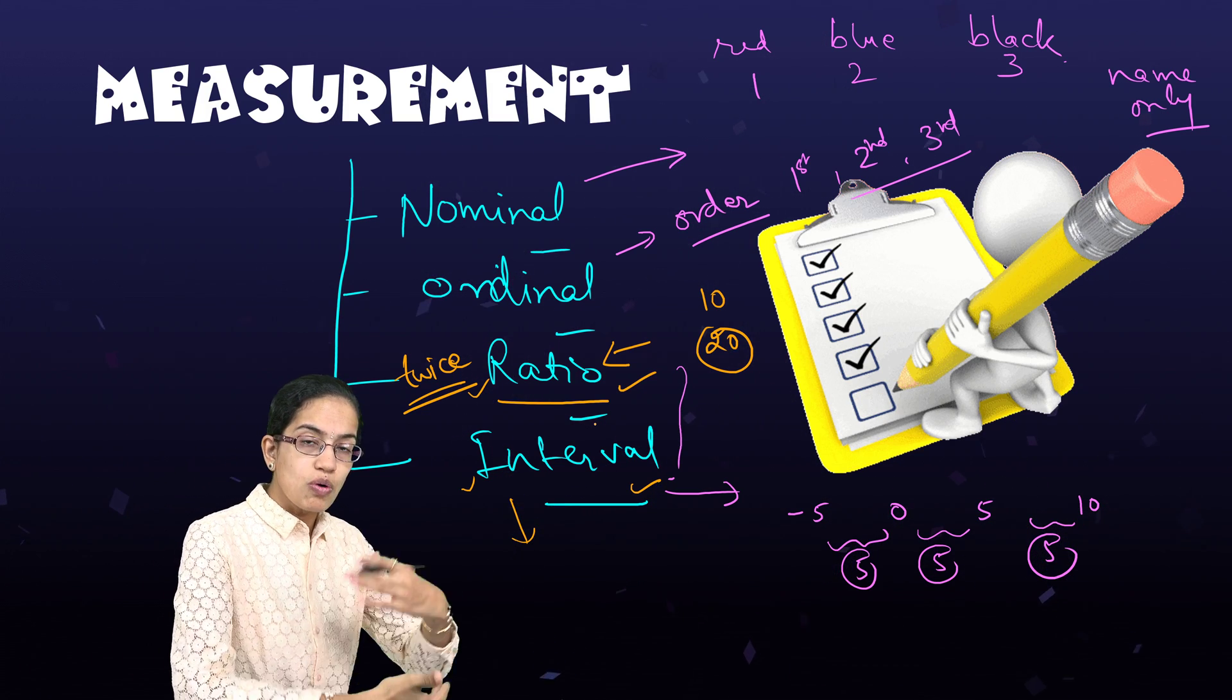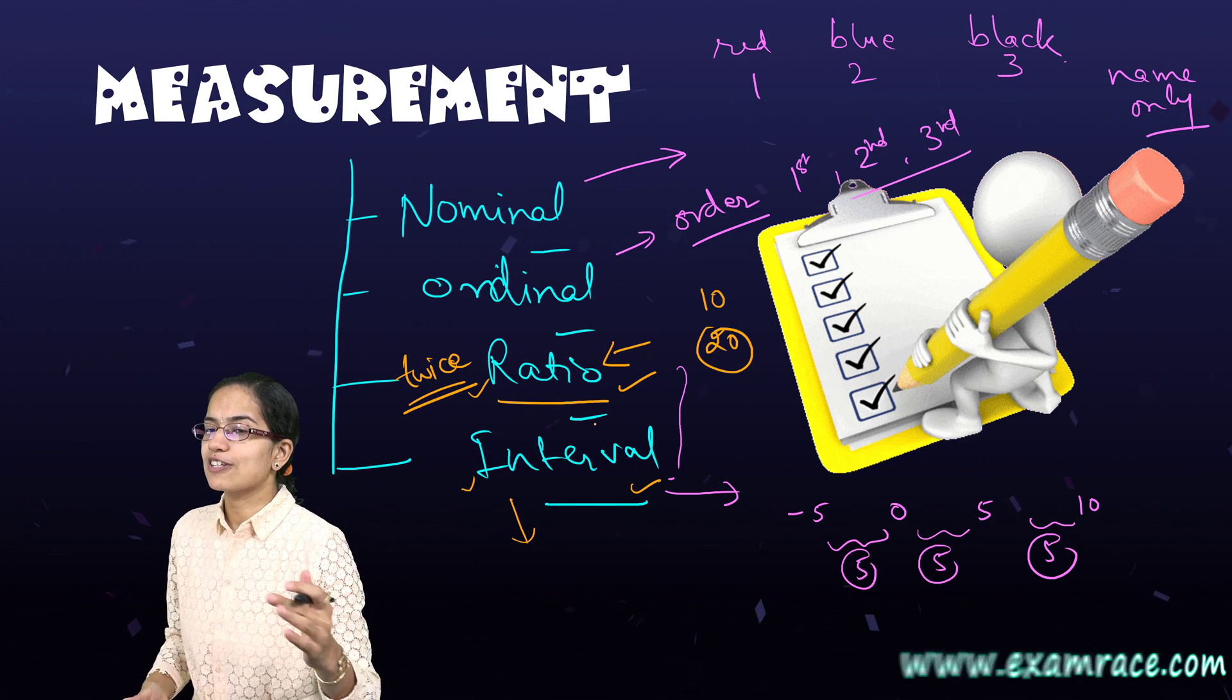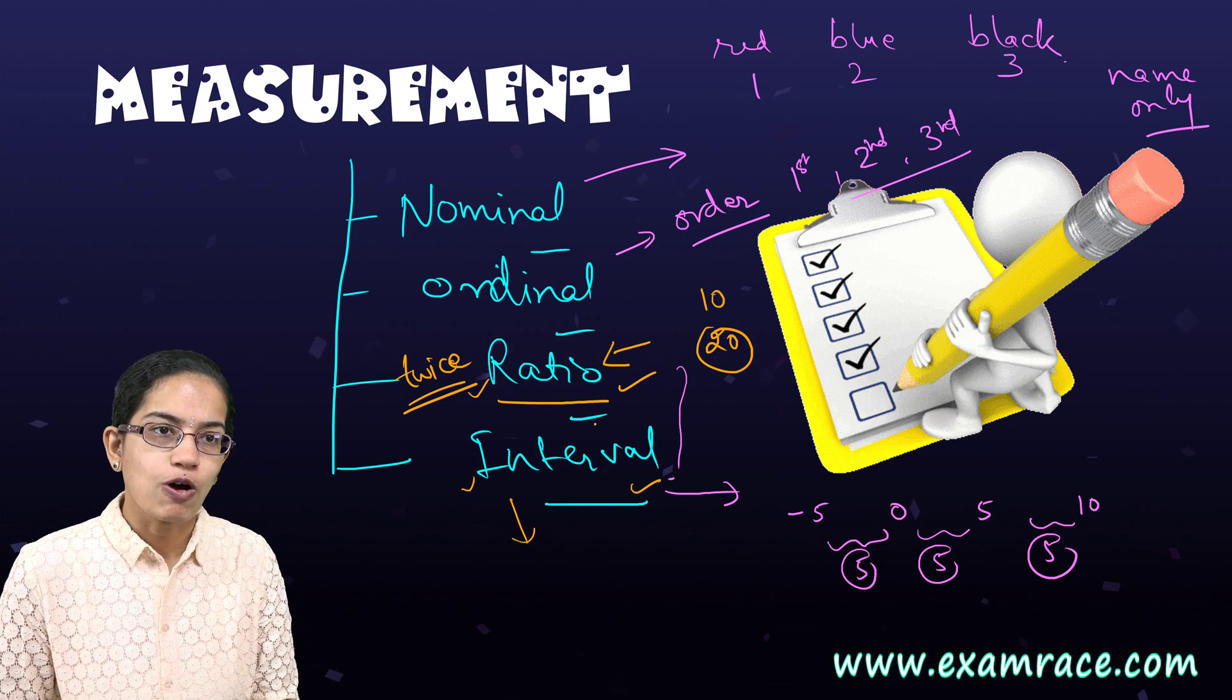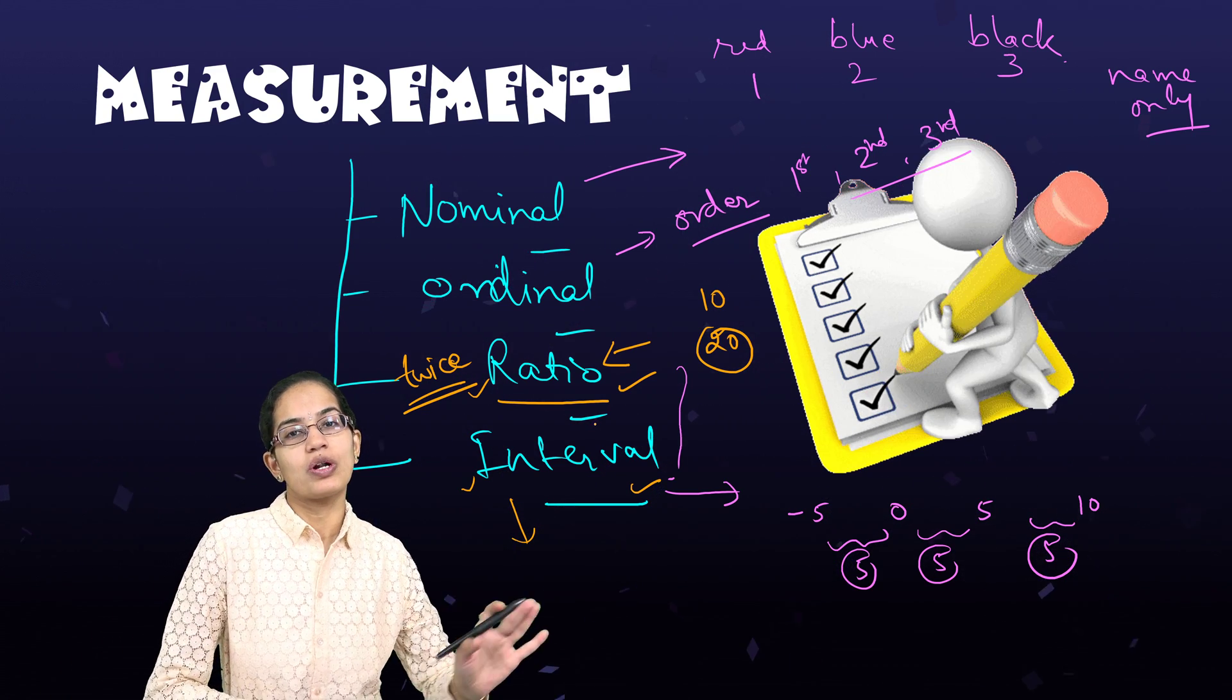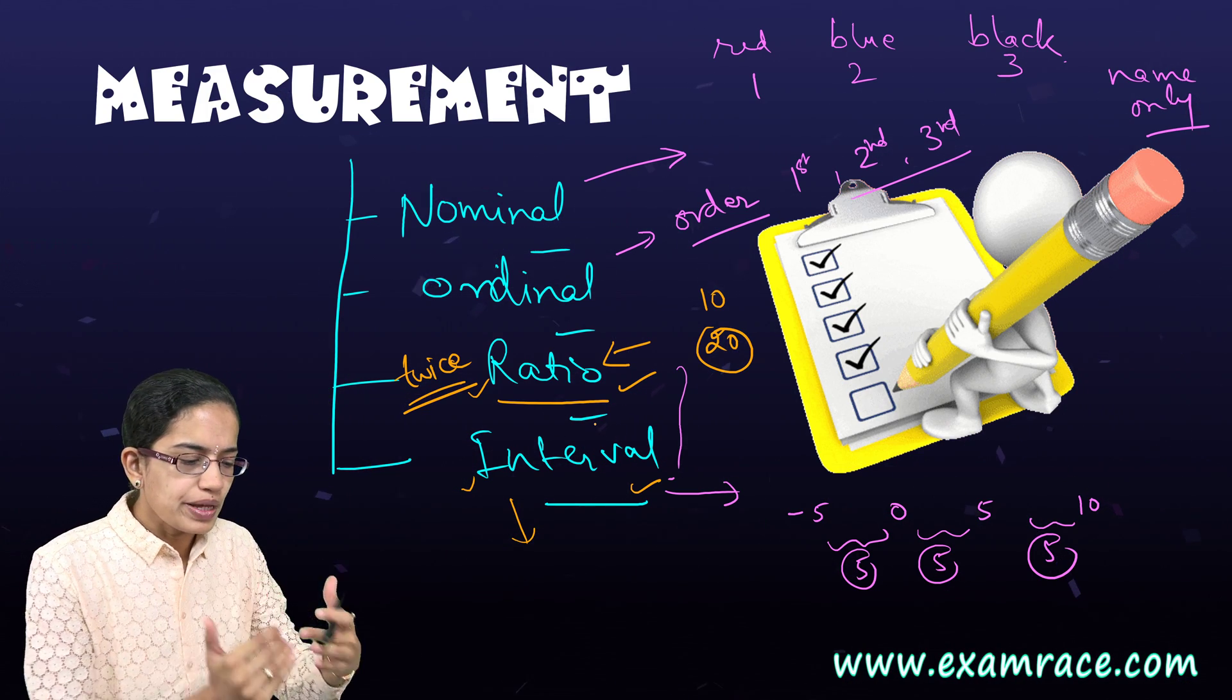But in the same ratio, I cannot say an example of today is half as cold as yesterday. No, that won't be a sound example for this. So to make this example sound, I would have to have a better interval score.